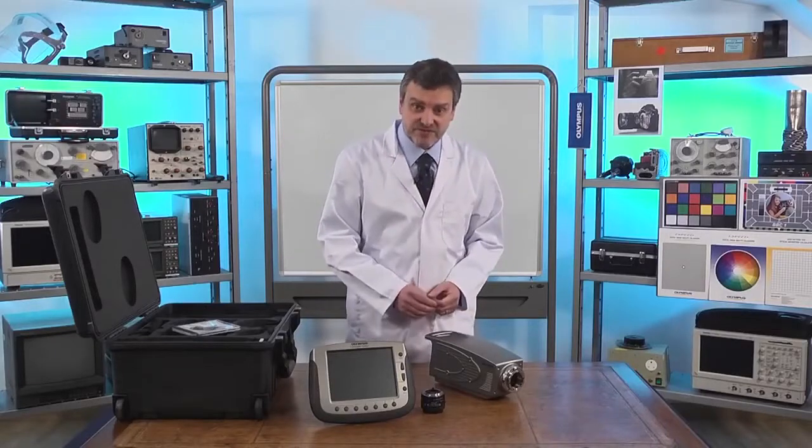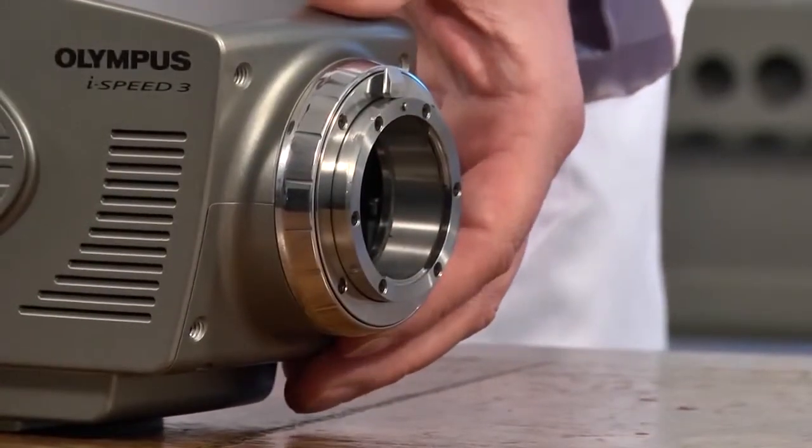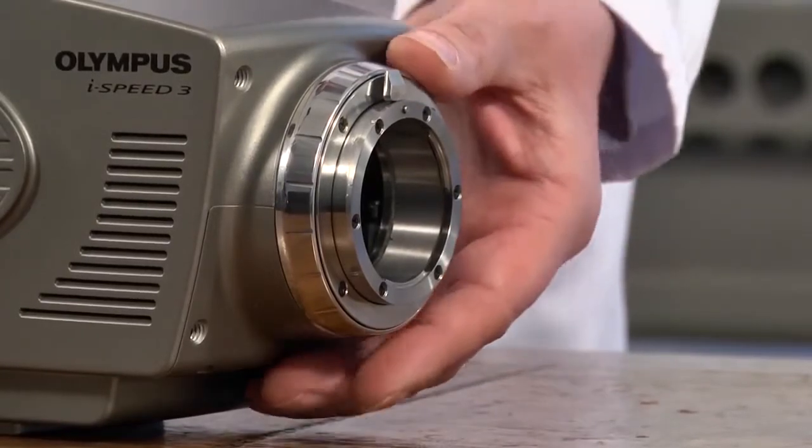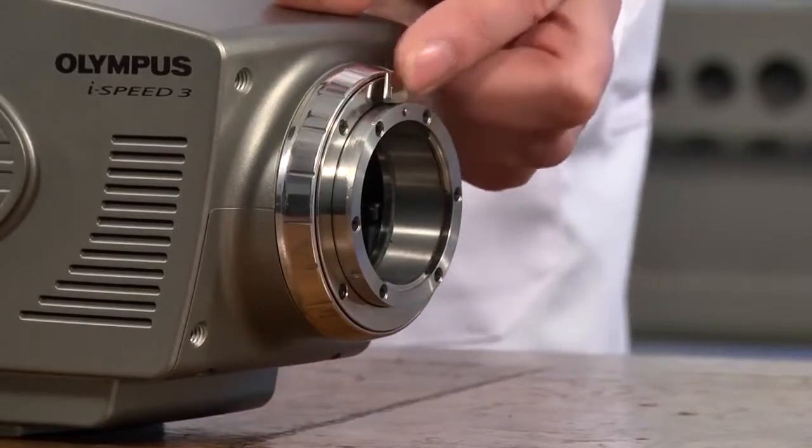So let's look at some of the features of the camera itself. At the front of the camera we have an F mount lens mount with an adjustable back focus mechanism and also a lens release pin.